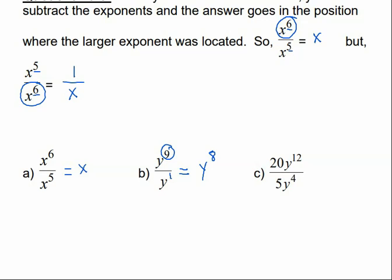For c, we have big numbers and variables, so let's deal with the big numbers first. 20 divided by 5 is 4. Then y to the 12th divided by y to the 4th: 12 minus 4 is 8. The bigger exponent is on top, so the variable goes on top, giving us 4y to the 8th.